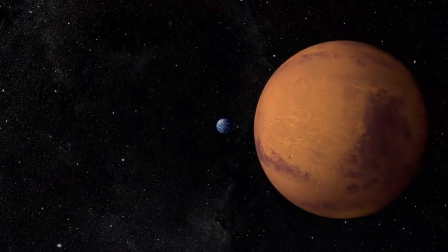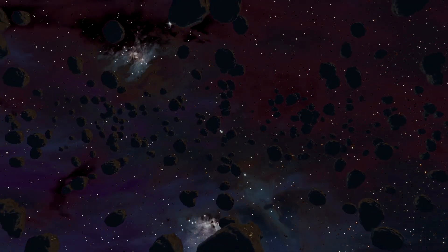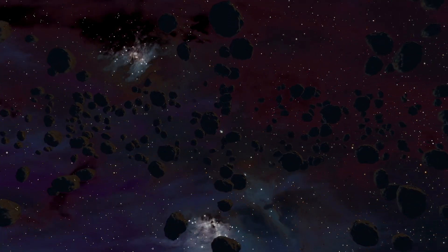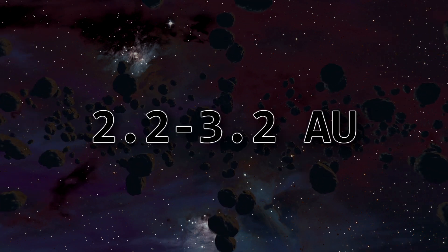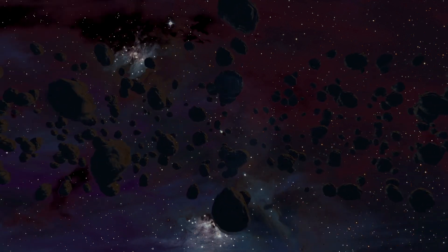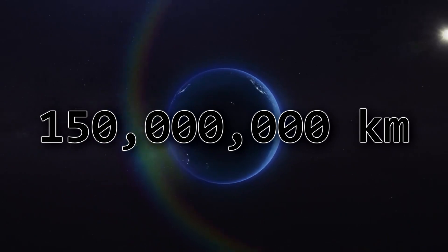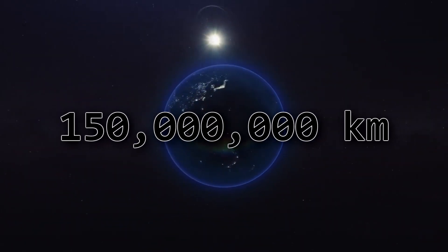Going out from the Sun and passing the Earth and Mars, we find the asteroid belt, a ring of millions and millions of asteroids that circle the Sun between 2.2 and 3.2 astronomical units from the center. One astronomical unit, or AU, is the distance between the Earth and the Sun, roughly equating to 150 million kilometers.